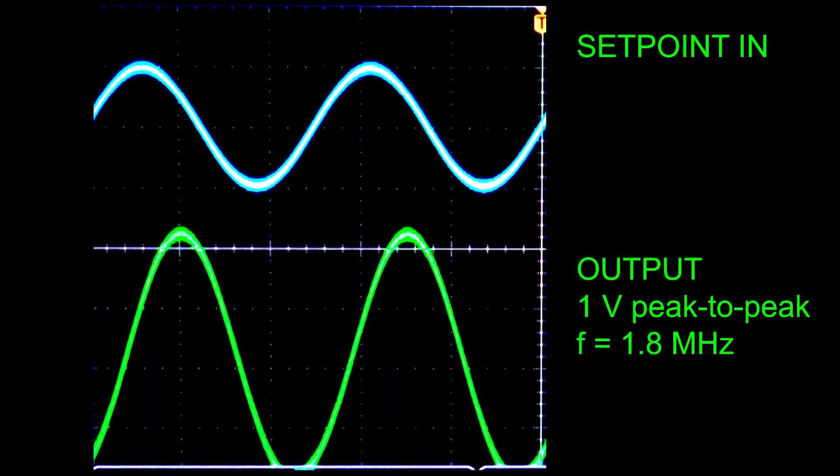The frequency response of a system is usually specified with a single frequency sine wave as input. At Wavelength, we specify the 3 dB bandwidth of a laser diode driver as the sinusoidal frequency that is half attenuated through the controller. The bandwidth of a driver is specified in the datasheet.